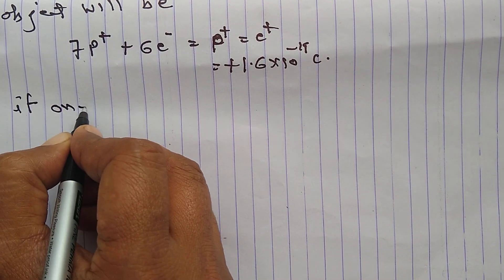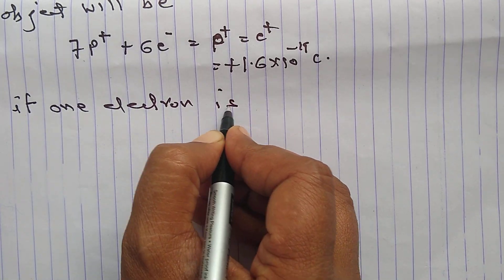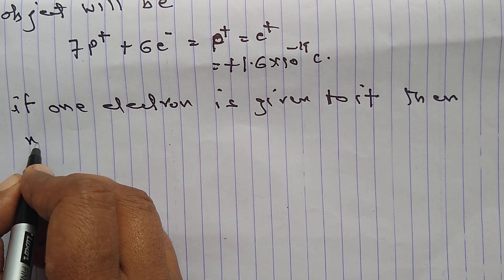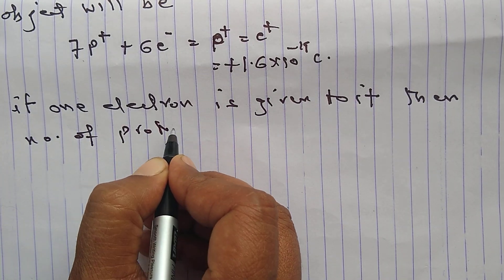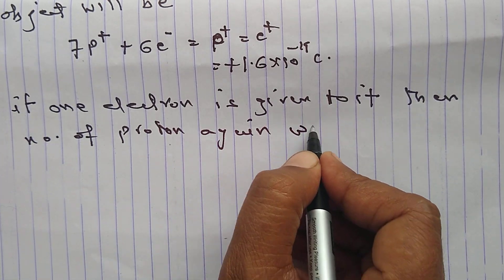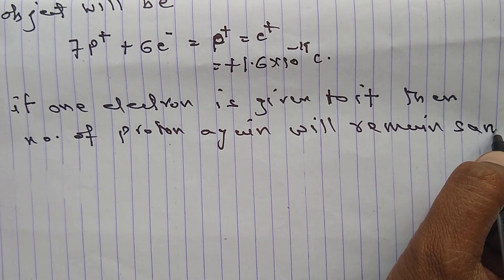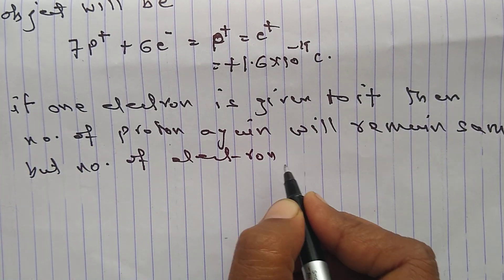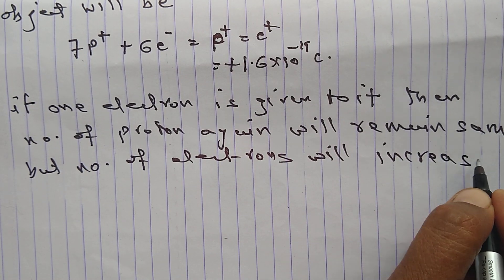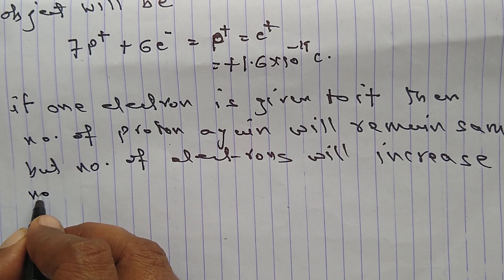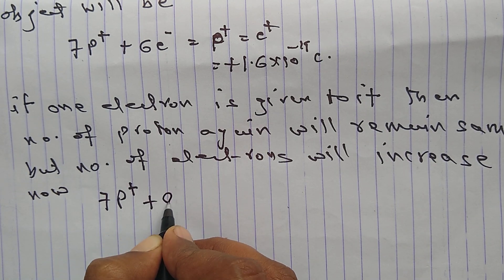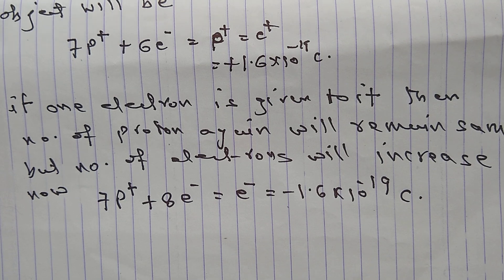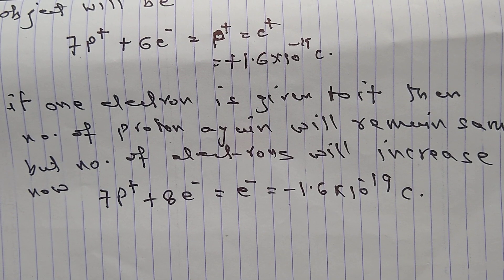Similarly, if one electron is given to it, the number of protons remains the same but the number of electrons increases to 8. So 7 protons and 8 electrons give a net negative charge. This is the basic fundamental of how a body or object acquires charge.